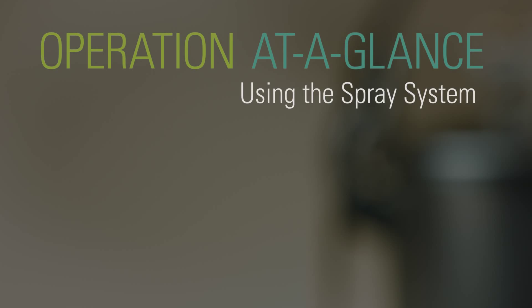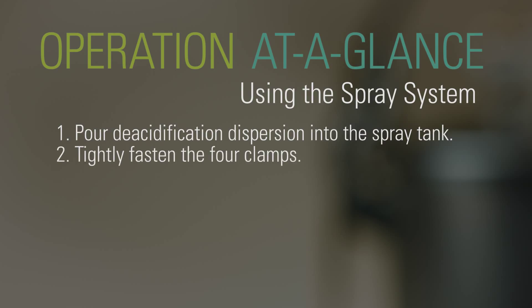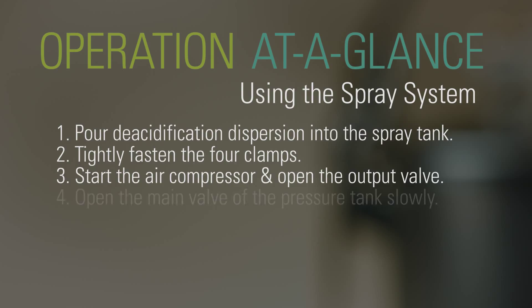Using the spray system. Pour deacidification dispersion into the spray tank. Tightly fasten the four clamps. Start the air compressor and open the output valve. Open the main valve of the pressure tank slowly.